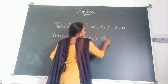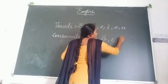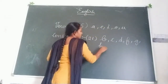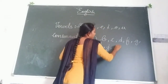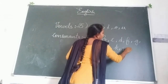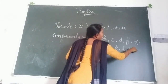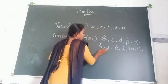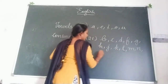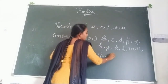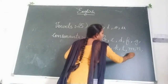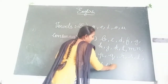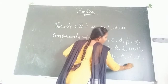Write consonants. The consonants are: B, C, D, F, G, H, J, K, L, M, N, P, Q, R, S, T, V, W, X, Y, Z. Note: O is a vowel so we do not include it here.